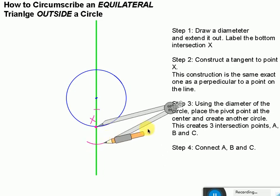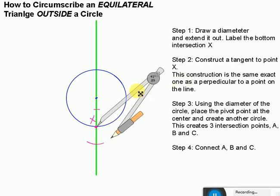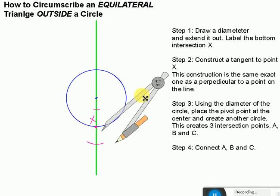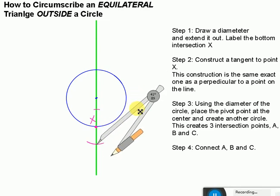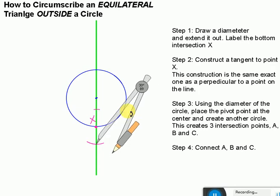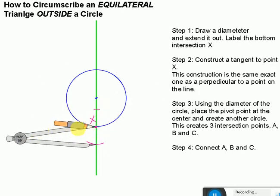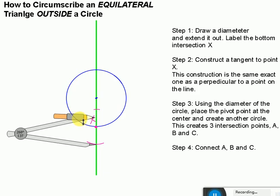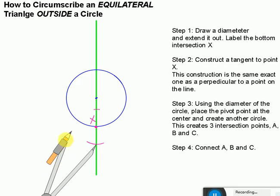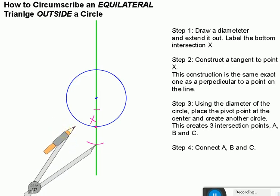So I've made the two tick marks there and now I want to place my pivot point right here where it intersects and I want a radius that's larger than half. So I take a radius that's larger than half and now I'm going to adjust this and make a tick mark here.